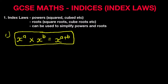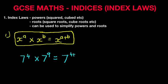Let's work through an example. Suppose we have the question: 7 to the power of 4 times 7 to the power of 9, and it asks you to simplify this and write the answer in index form. Well, 7 to the power of 4 times 7 to the power of 9 equals 7 to the power of 4 plus 9, which becomes 7 to the power of 13. So it really is that simple.